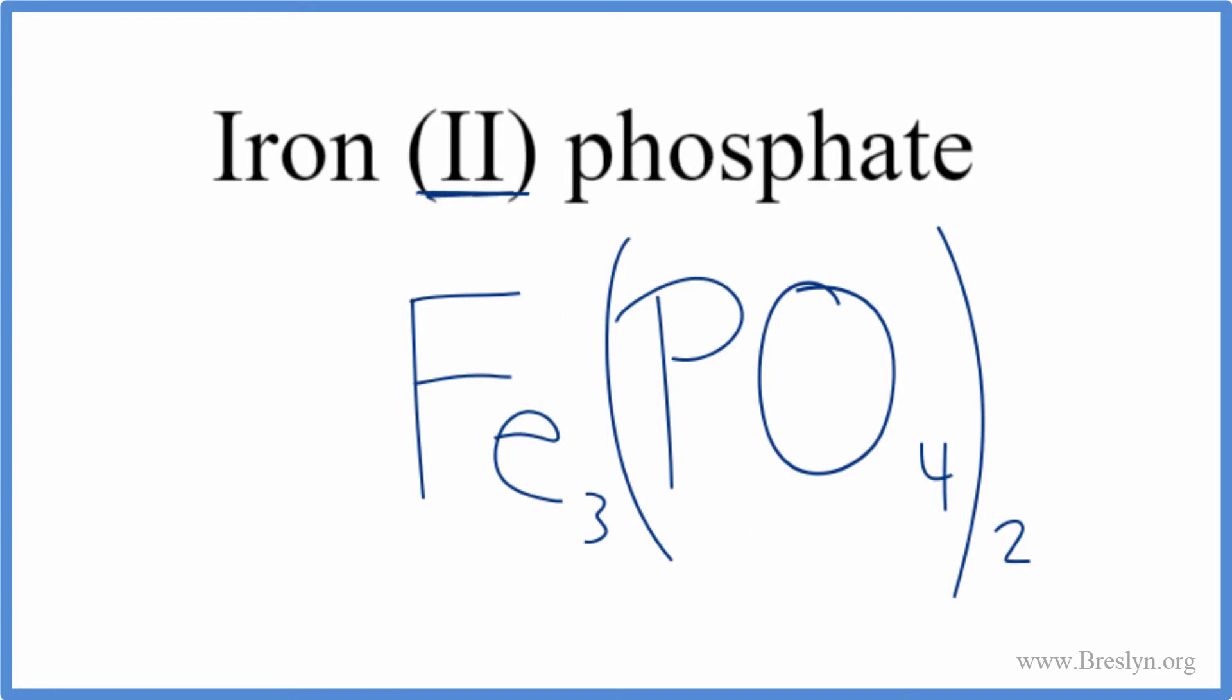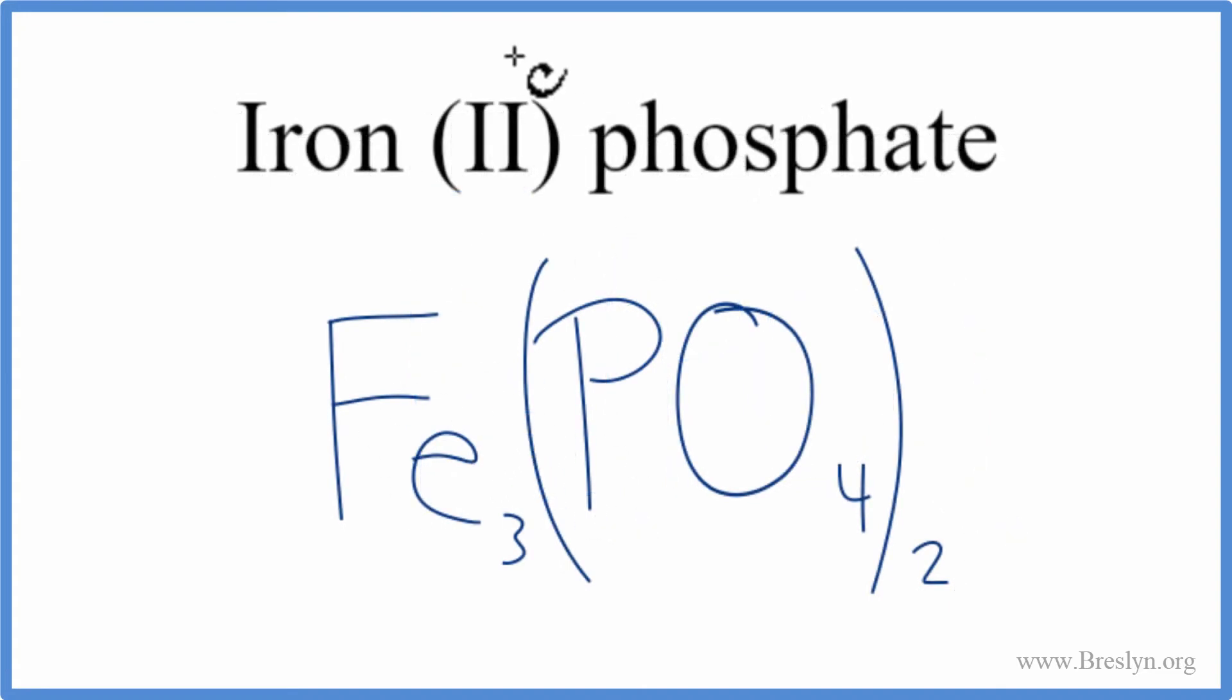Let's check our work, though. We said iron, because of this Roman numeral, was 2 plus, and the phosphate was 3 minus. So we have two of these phosphates. Each one's 3 minus. Two times 3 minus is 6 minus. Three of the irons, 3 times the 2 plus, 6 plus. These add up to zero, give us a net charge of zero. We're done. This is the correct formula for iron (II) phosphate.